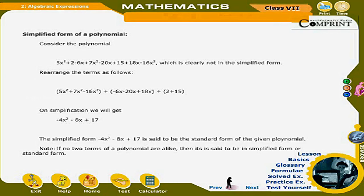Simplified form of a polynomial: Consider the polynomial 5x² + 2 − 6x + 7x² − 20x + 15 + 18x − 16x², which is not in simplified form. Rearranging terms: (5x² + 7x² − 16x²) + (−6x − 20x + 18x) + (2 + 15). On simplification, we get −4x² − 8x + 17. This is the standard form of the given polynomial. Note: if no two terms of a polynomial are alike, it is said to be in simplified or standard form.